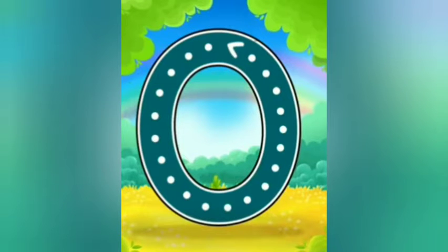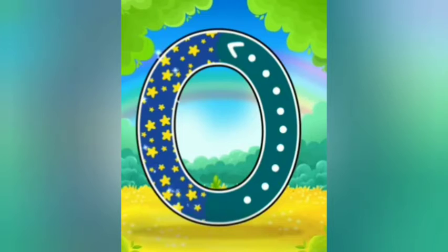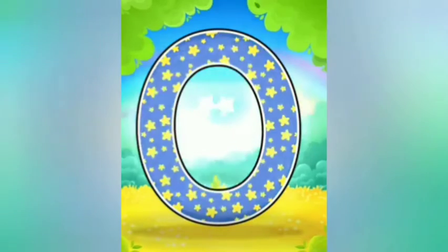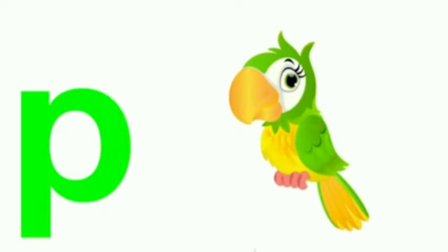Small letter O. O is for orange. See the formation of writing O: start making a circle, or make a round.